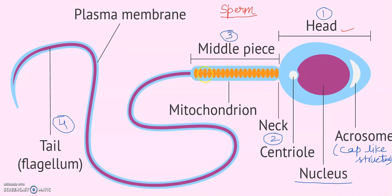The middle piece is the region below the neck. It consists of spiral mitochondria — you can see here the mitochondria which is spiral in shape. The middle piece consists of spiral mitochondria and it provides energy for locomotion.